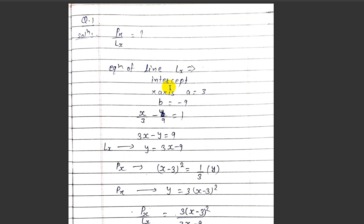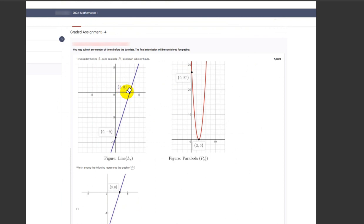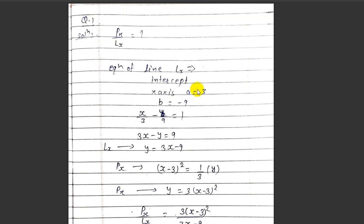To find the equation of the line, we use the intercepts given. The x-intercept is 3 and the y-intercept is minus 9. So a equals 3 and b equals minus 9. Using the intercept form x/a + y/b = 1, the equation becomes x/3 minus y/9 = 1, which gives us 3x minus y = 9, so y = 3x minus 9. This is l(x).